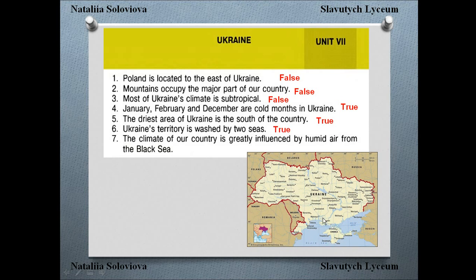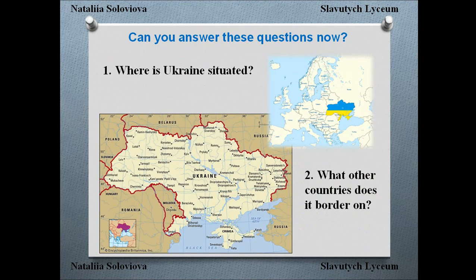'The climate of the country is greatly influenced by humid air from the Black Sea.' I can see the Black Sea here, but the text says Ukraine's climate is influenced by the humid air from the Atlantic Ocean. So that sentence is false.